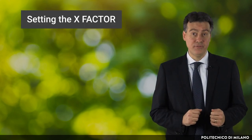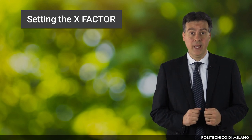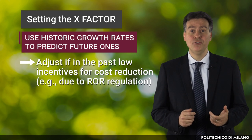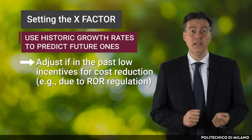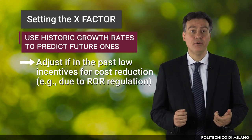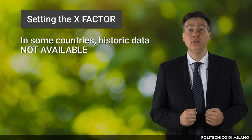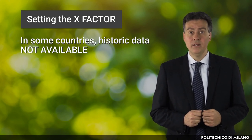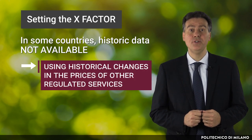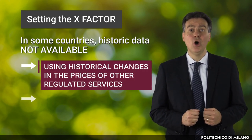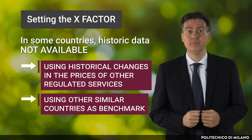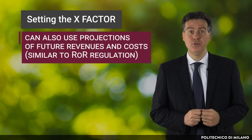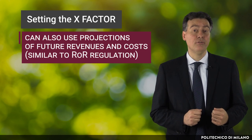How does the regulator choose the x-factor — the estimated productivity growth to set the cap? It can use historic growth rates to predict future rates, but must adjust its estimates if in the past there were low incentives for cost reduction, for example due to rate of return regulation. Using historical data might be difficult in some countries where data is not always available. In this case, as an alternative, the regulator can use historical changes in the prices of other regulated services, or use other similar countries as a benchmark. Whatever the method chosen, the regulator can also base the x-factor on projections of future revenues and costs, similar to rate of return regulation.